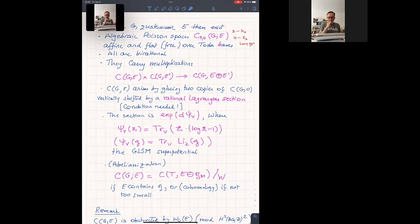And here's the construction from the B model. So I could call that, I should, in fact, B model construction, the B. So the Coulomb branch arises by gluing two copies of the basic or the total space by a vertical shift by a rational Lagrangian section. Rational means that singularities and indeterminacies, and that's what makes things happen. And I'll spell out the condition later.